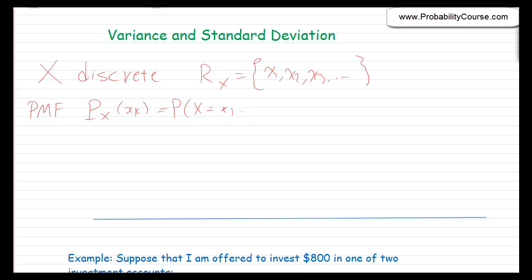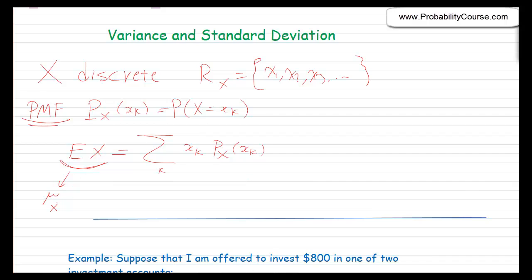We defined the expected value of x, E[x], as the sum of x_k times the probability that x equals x_k. The expected value is sometimes shown by mu, or mu sub x, to indicate it's the expected value of the random variable x.